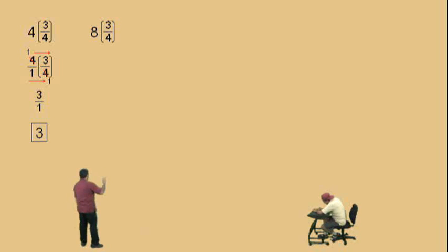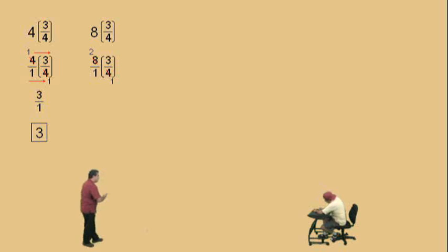Now, watch this, Charlie. 8 times 3 fourths. Notice here, we have 8 over 1 times 3 over 4. And Charlie, we can reduce the 8 and the 4. How does that reduce? 2 over 1. And notice, the denominator is going to be 1, and the numerator will be 6. Just like that. And so, our answer is 6.